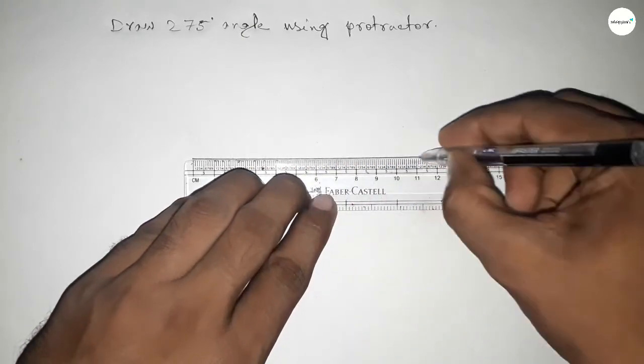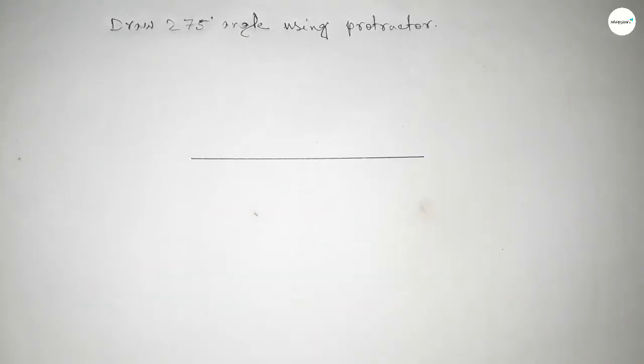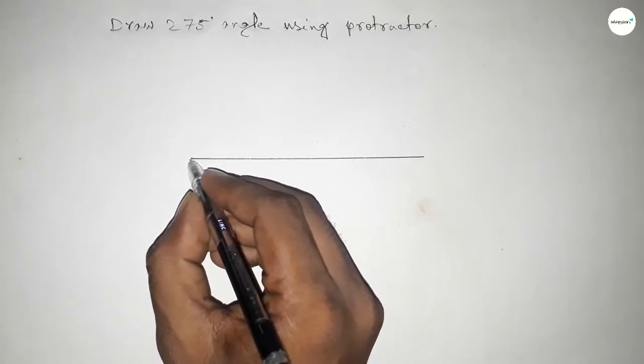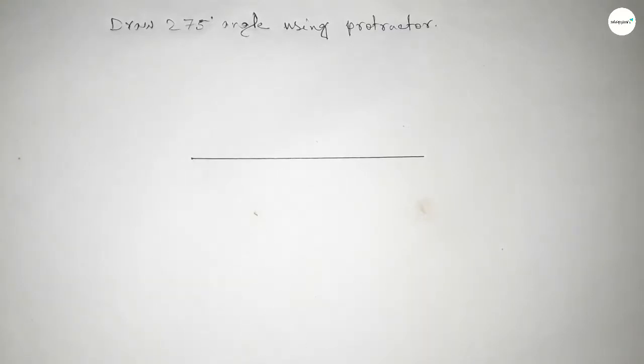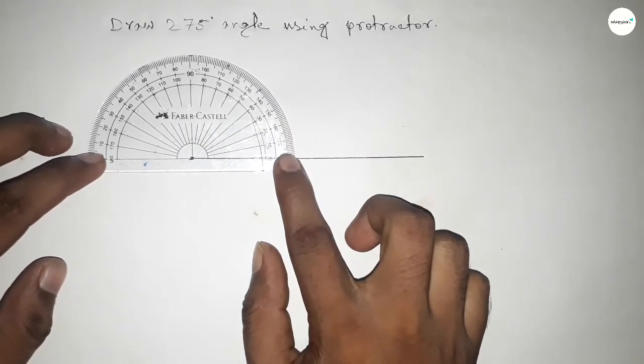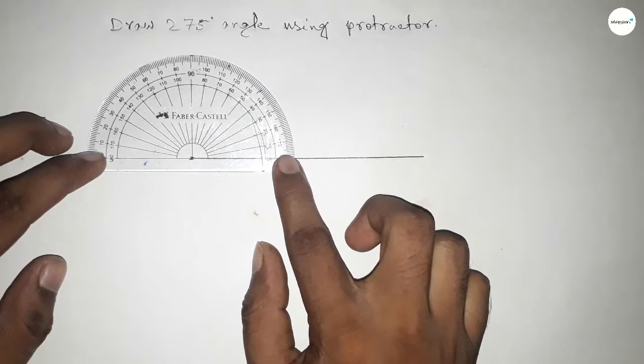Draw a line of any length here. Next, pointing out here to draw 275 degree angle on this point. So first we have to put the protractor on the line perfectly, then counting the angle.